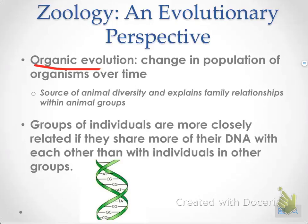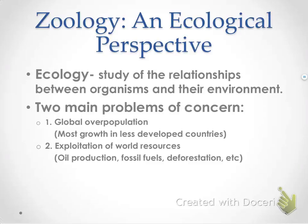There's also something called organic evolution. Organic evolution is the change in the population. It looks at diversity — it's the source of animal diversity — and it also explains those relationships within groups of animals and why certain species are more closely related than others. Groups of individuals are more closely related if their DNA is similar. For example, humans and chimps have more DNA similarity than, say, humans and bears.